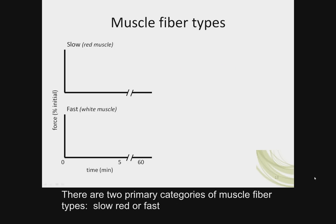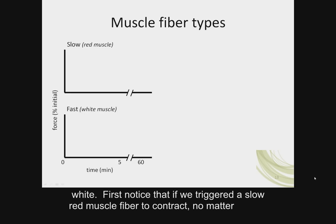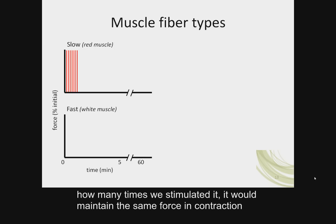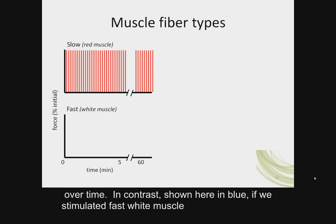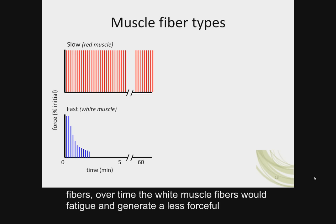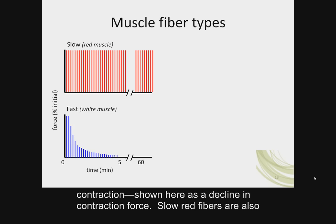There are two primary categories of muscle fiber types: slow red and fast white. If we trigger a slow red muscle fiber to contract, no matter how many times we stimulate it, it would maintain the same force of contraction over time. In contrast, if we stimulate fast white muscle fibers, over time they would fatigue and generate a less forceful contraction, shown as a decline in contraction force.